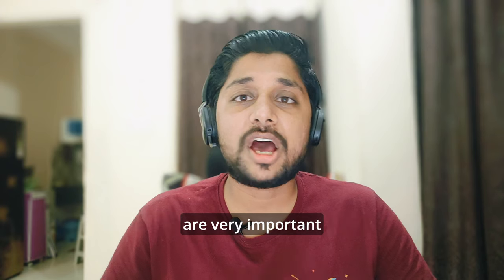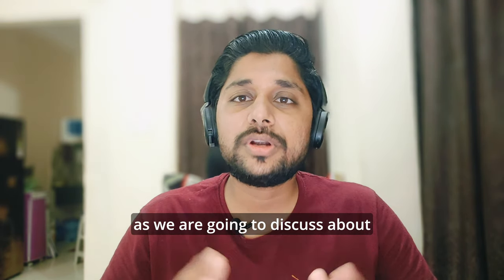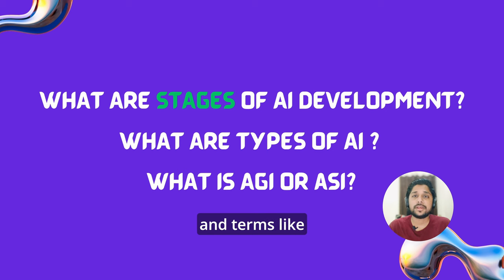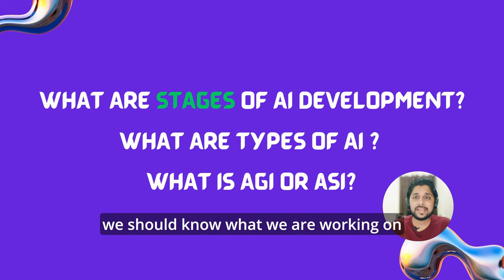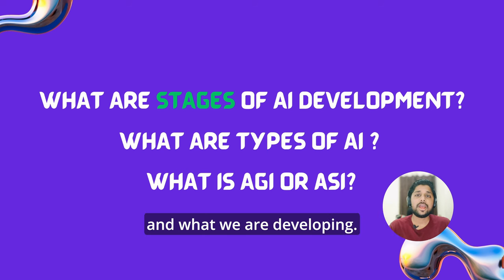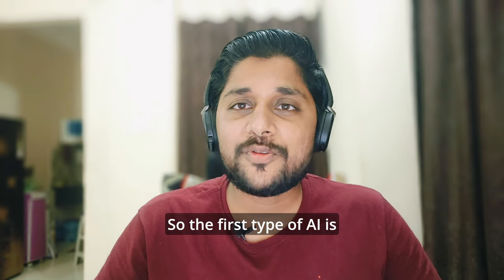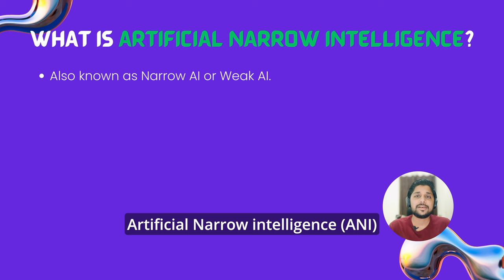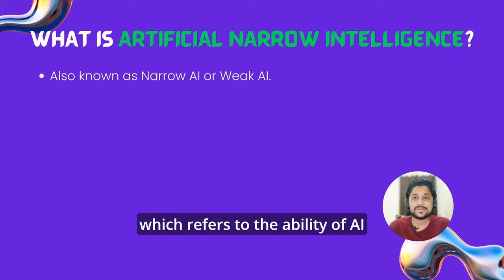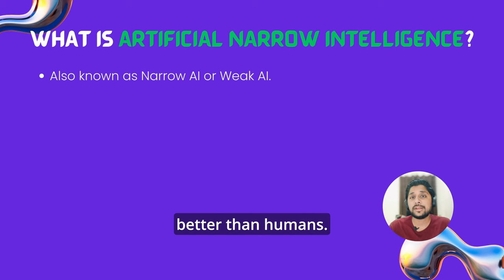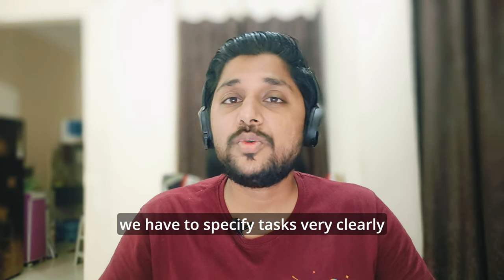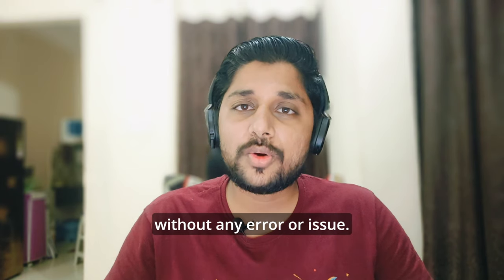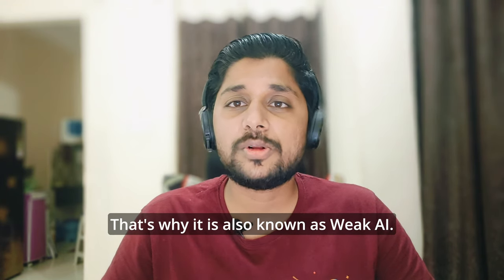The upcoming questions are very important as we are going to discuss types and stages of AI development, and terms like AGI and ASI which you should know even for day-to-day conversation. As an AI engineer, we should know what we are working on and what we are developing. So the first type of AI is Artificial Narrow Intelligence, simply known as Narrow AI, which refers to the ability of AI to perform a narrowly defined task similar to humans or in some cases better than humans. Narrow AI can only perform narrowly defined tasks, meaning we have to specify tasks very clearly without any error or issue. That's why it is also known as Weak AI.